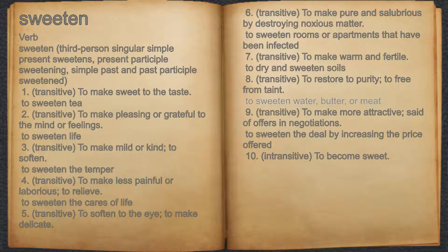Seven, transitive: to make warm and fertile — for example, to dry and sweeten soils. Eight, transitive: to restore to purity, to free from taint — for example, to sweeten water, butter, or meat.